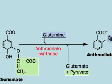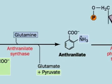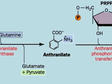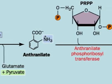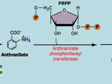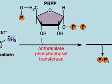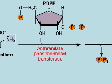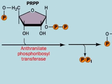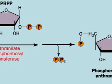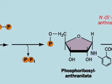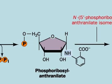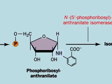Glutamine contributes an amino group, forming anthranilate. Phosphoribosyl pyrophosphate then adds a phosphoribosyl group, losing its pyrophosphate and making phosphoribosyl anthranilate.